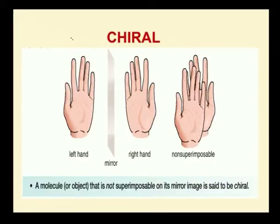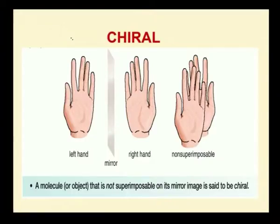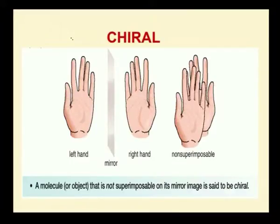What is chiral? To explain chiral, we take the best example of our hands. If you see the right hand and left hand, both are not superimposable. If I place my right hand next to the mirror, the image produced is the left hand. Similarly, if I place my left hand next to a mirror, the image is my right hand. At any point, both the hands are not going to be superimposed.